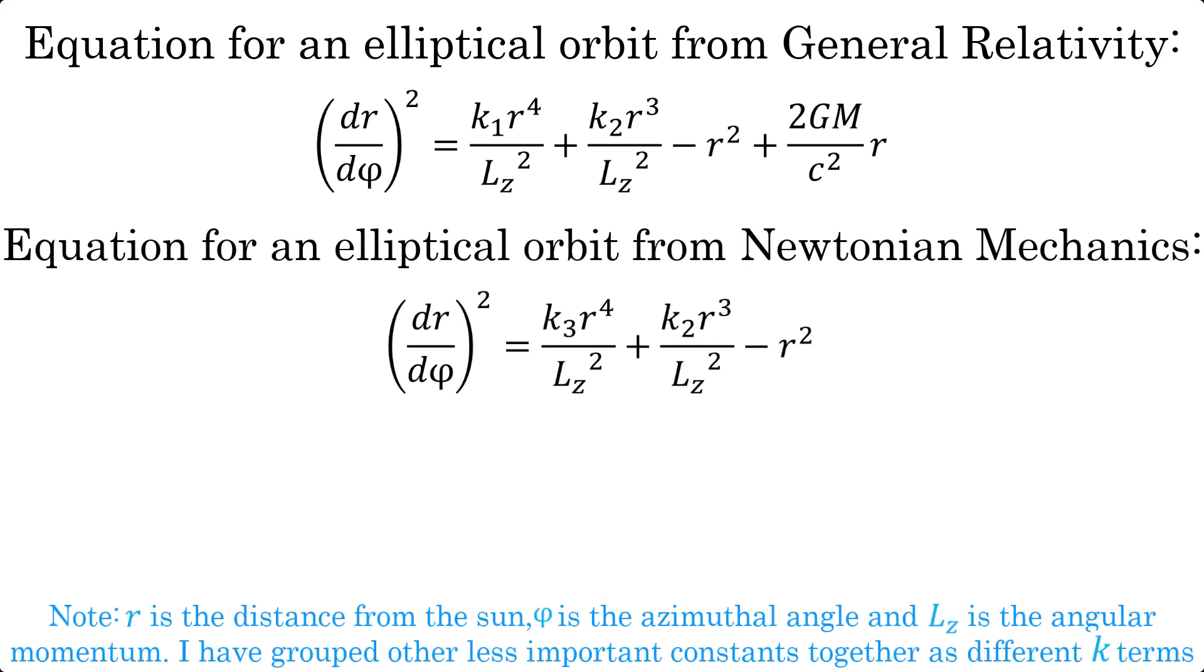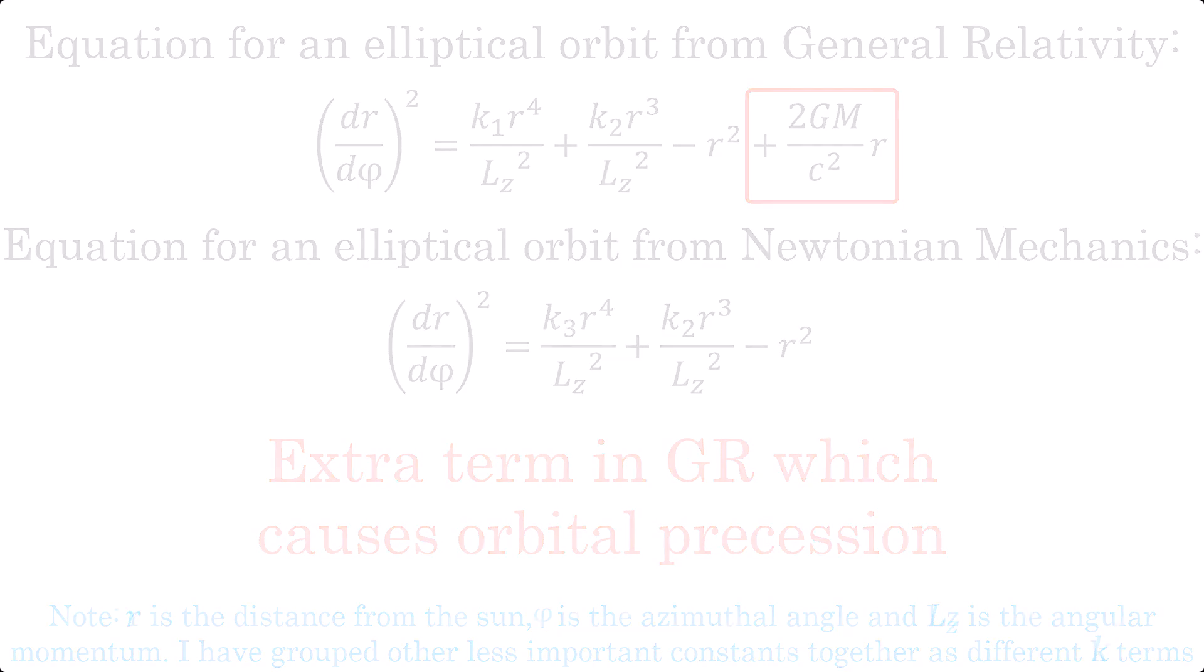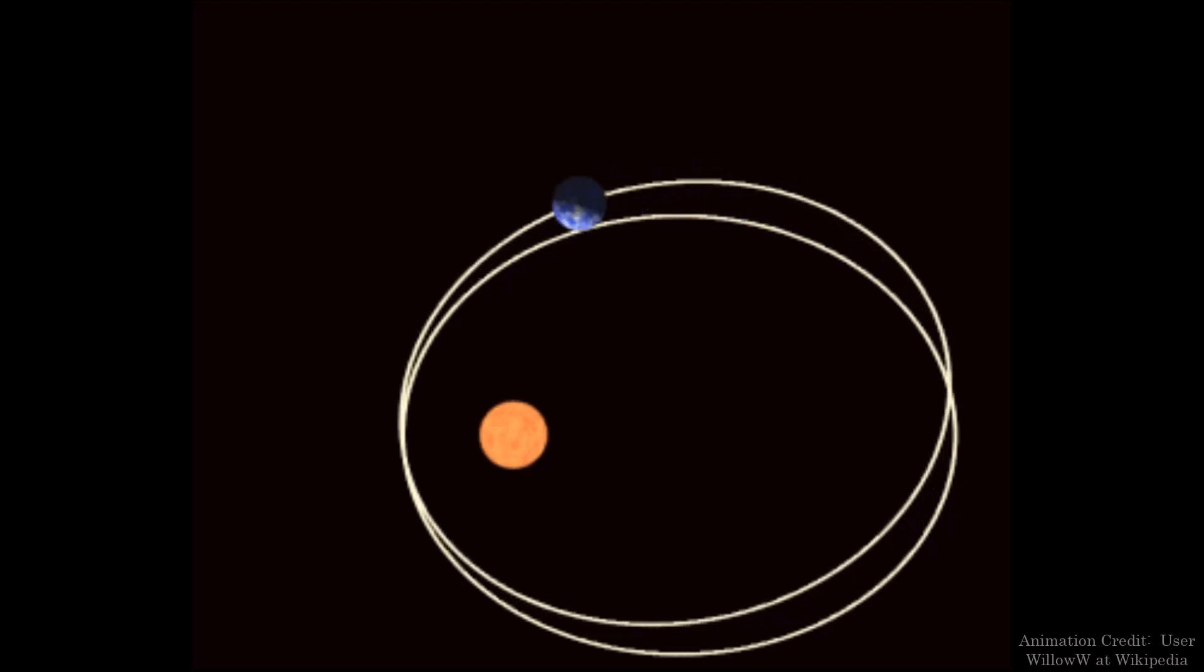There are similar terms in both that can be attributed to things like angular momentum conservation, but in the GR prediction there's an additional term which corresponds to the shifting of the orbit. This manifests physically as the entire orbit moving within a plane or precessing after each complete period. An exaggerated depiction is shown here, showing the predicted precession from GR.